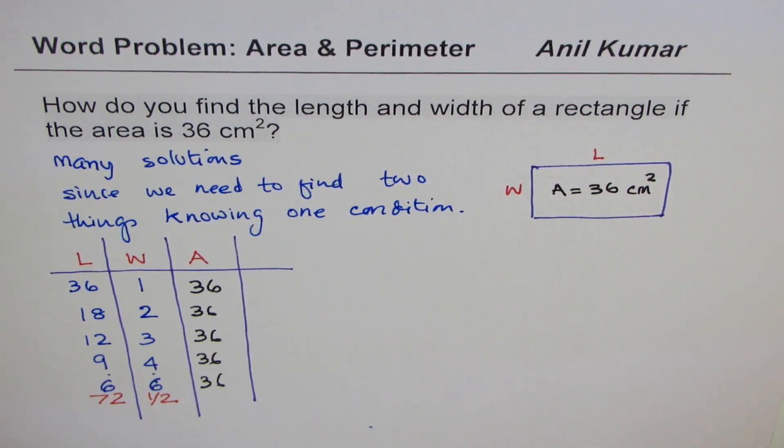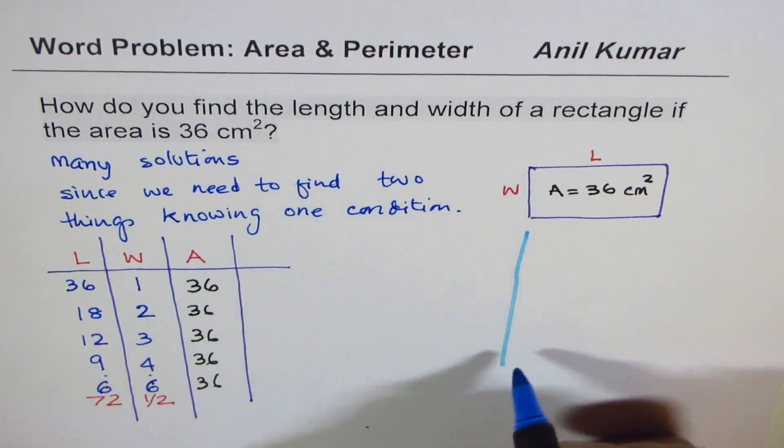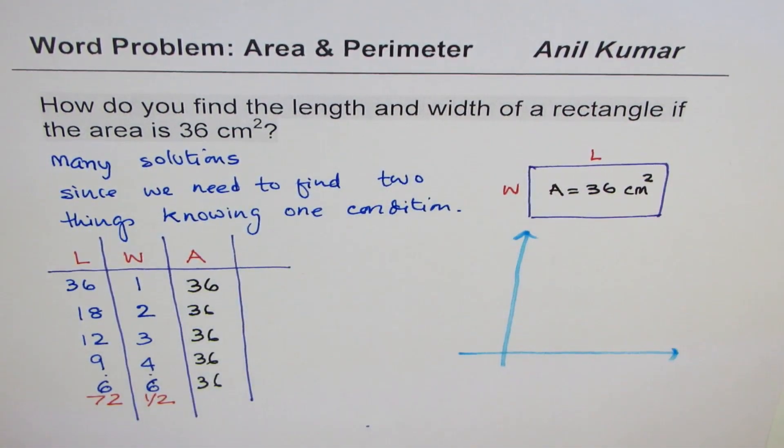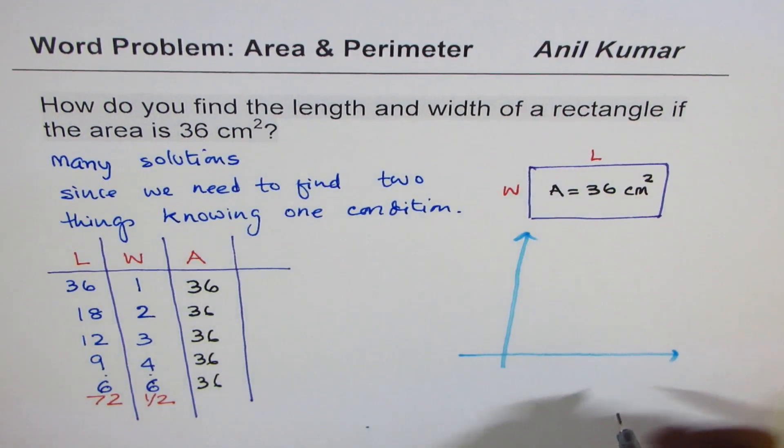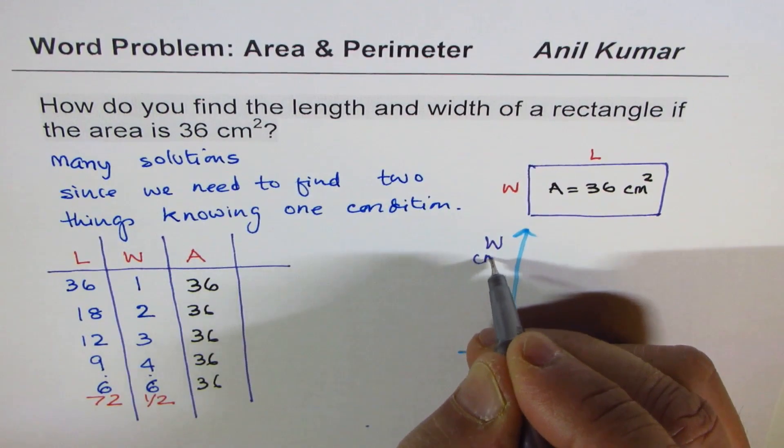If we plot these points, then we could show it here. We know one thing, that both length and width are going to be positive. So if we take smaller value, let's say this is length, and this is width for us. Both are in centimeters.